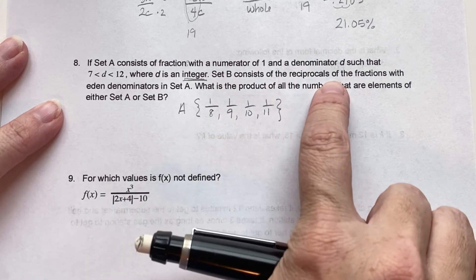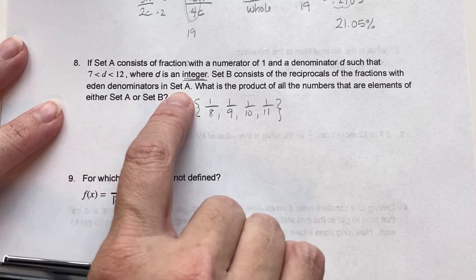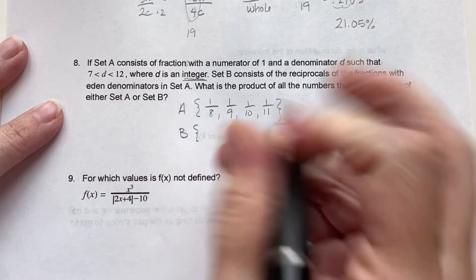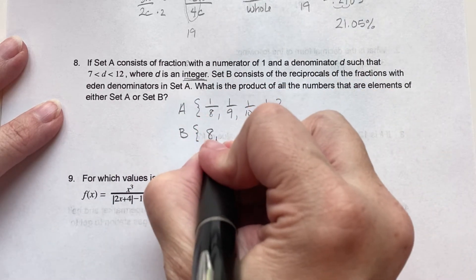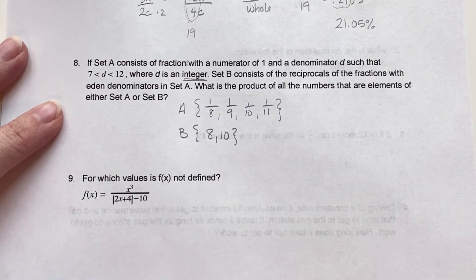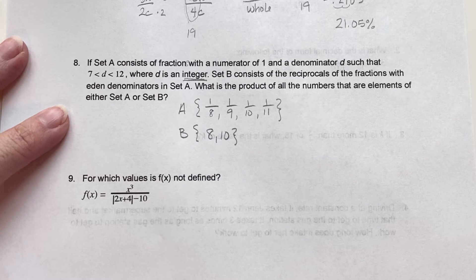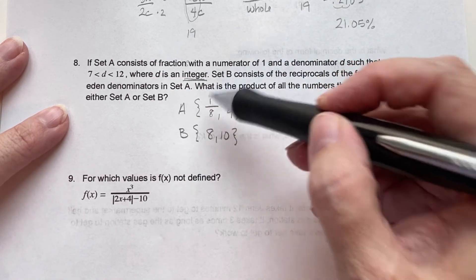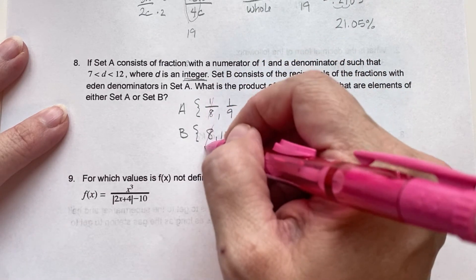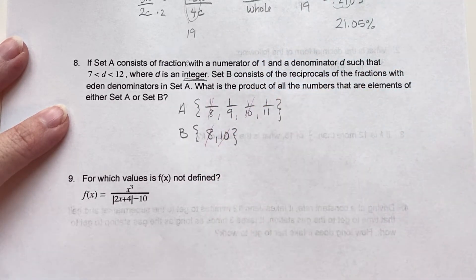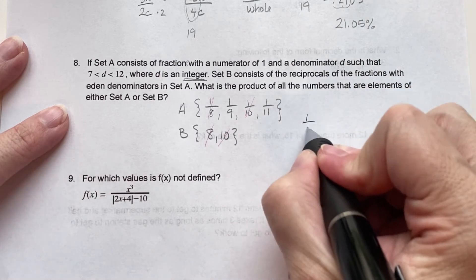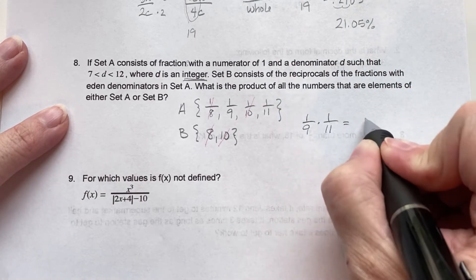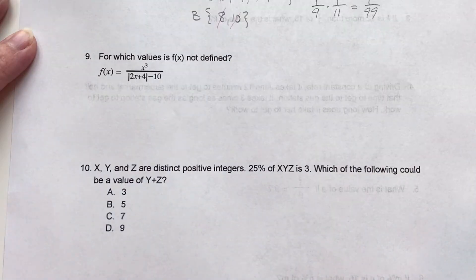Set B consists of the reciprocals of the fractions with even denominators in set A. So set B is only the even ones, so 8 and 10. What is the product of all the numbers that are elements in either set A or set B? So product, which means we're going to multiply all these together. Now what I know is that when I multiply a reciprocal together, it'll automatically cancel out. So the 1 8th times 8 is going to cancel. The 1 10th times 10 is going to cancel. So now all we're left with is 1 over 9 times 1 over 11, which gives us 1 over 99.